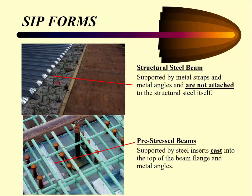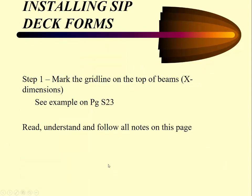The forms are attached to the beam. On concrete pre-stress beams, they're supported by steel inserts cast into the top of the beam and the metal angles that go on it — you can see the metal angle cast into the beam and then the angle welded to it. For structural steel beams, there is a strap that lays across the girder freely, and then beside it is the angle which gets welded to it.